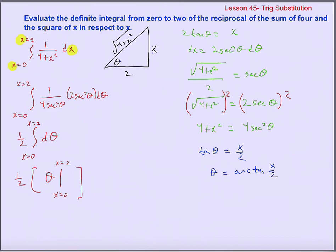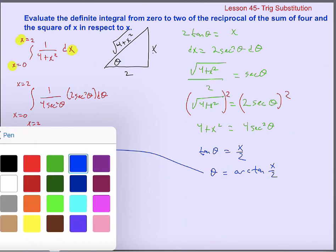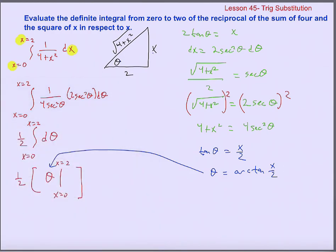That can be substituted back in. I can rewrite the expression as one half times the arc tangent of x over 2, evaluated from 0 to 2. Now that I'm talking about x again and have x back in the expression, I don't need to write x equals 0 and x equals 2 — that's just the variable in the expression.